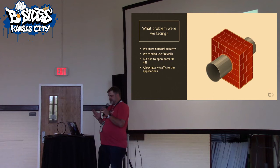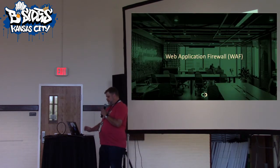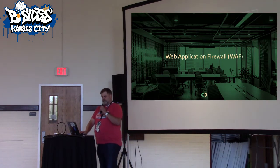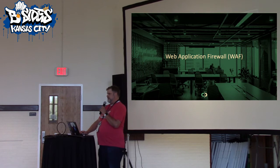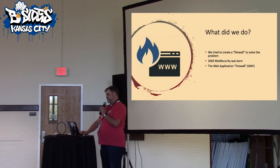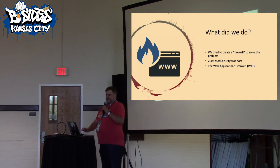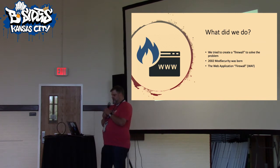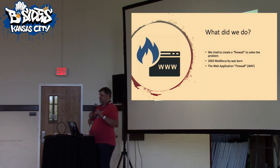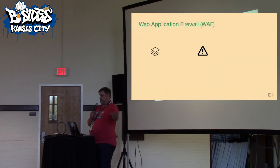Web application security was kind of new, and we weren't sure what to do with it. So what did we do? We knew firewalls, so we built one for the web. We called it a web application firewall, or WAF. Way back in 2002 was really the first WAF — Mod Security was born — and we started using that to help protect those wide open gaps in our regular network firewalls.